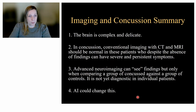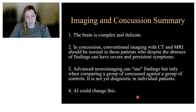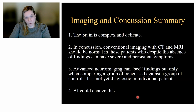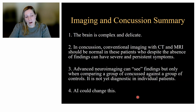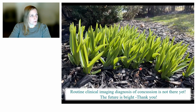In summary: the brain is incredibly complex and delicate. In concussion, traditional conventional imaging with CT and MRI should be normal. Despite having no imaging findings, patients can still have severe and persistent symptoms. Advanced neuroimaging can detect findings, but only when compared to a group of normal controls, and it is not yet diagnostic at an individual patient level. With advances in computing and artificial intelligence, we may be able to understand these complex processes better in the future.